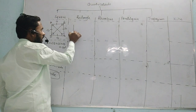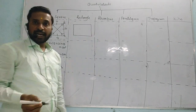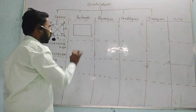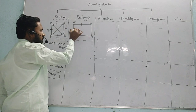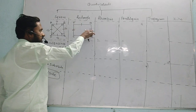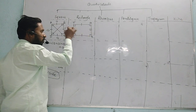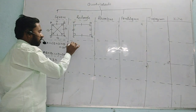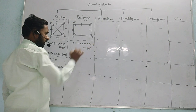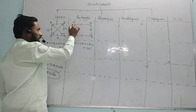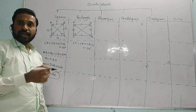Now let us see the second one, rectangle. All properties are almost the same as a square, but there is a little difference. For rectangle PQRS, the opposite sides are of equal measurement, and all four angles — angle P, angle Q, angle R and angle S — equal 90 degrees. The diagonals are also of equal measurement, meaning PR is equal to QS.